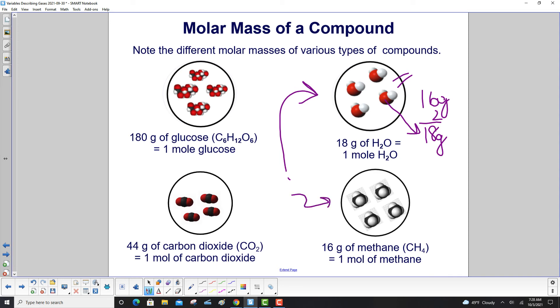16 grams of methane is one mole of methane. 44 grams of carbon dioxide is one mole of carbon dioxide. And finally, 180 grams of glucose, that's the biggest mass we have here, is one mole of glucose.